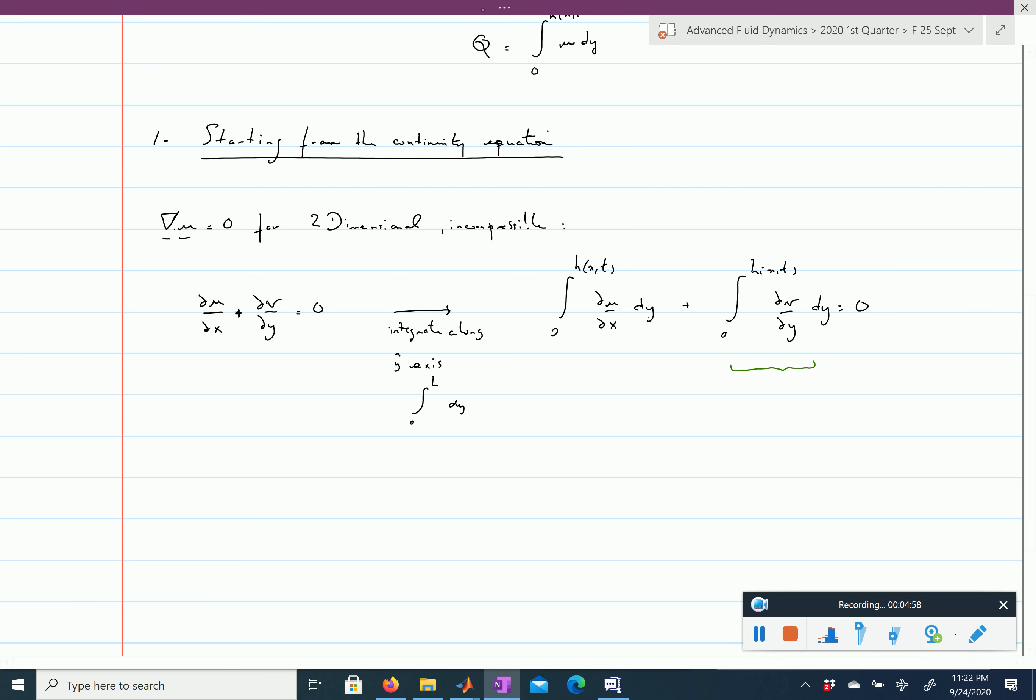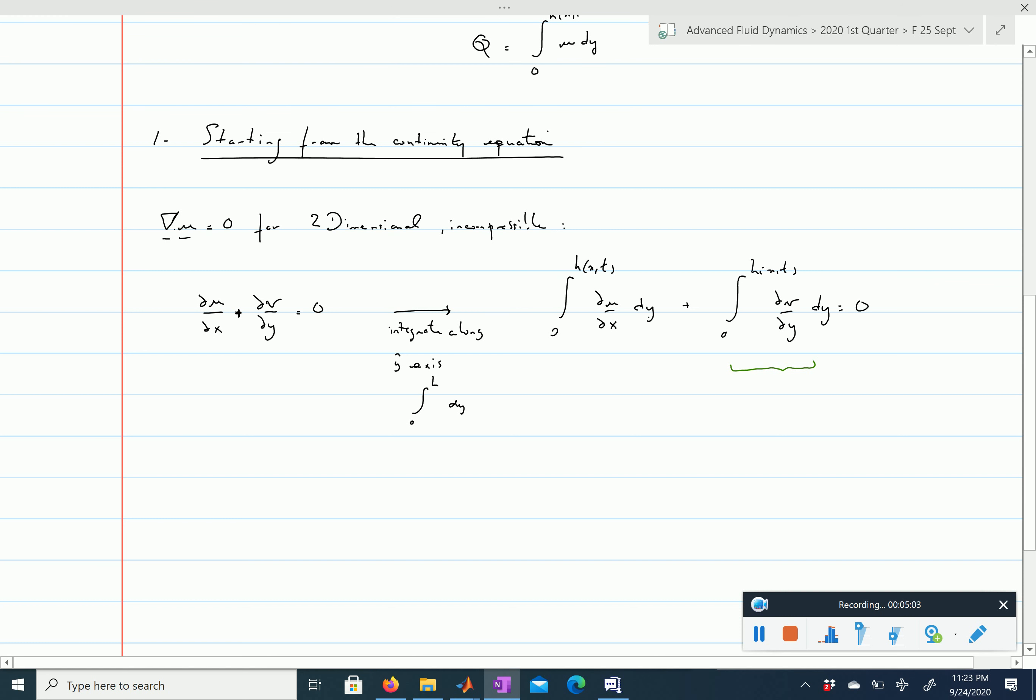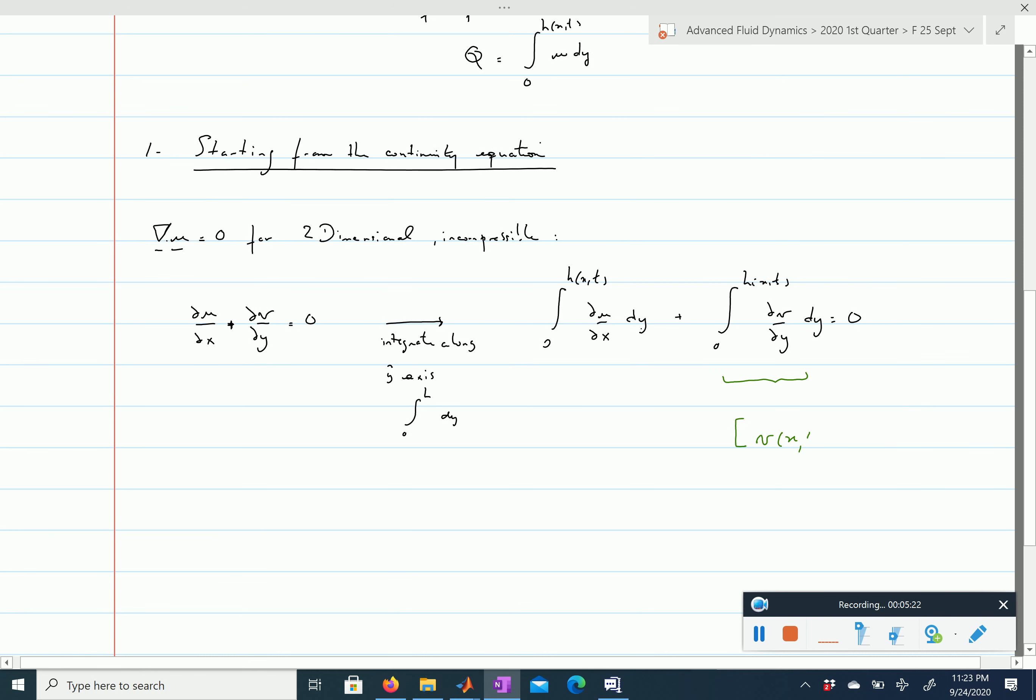It's easier to compute because you have a partial with respect to y and you're integrating with respect to y at constant x. This is just the anti-derivative of this function, which equals v(x,y,t) evaluated between 0 and h(x,t).